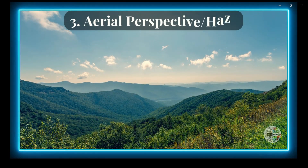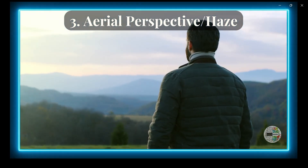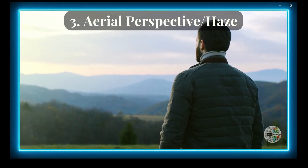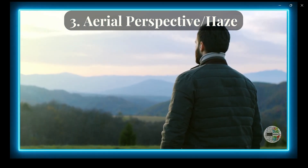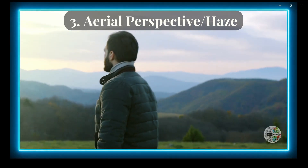Number 3: Aerial Perspective. When objects are far away, they might look fainter and a bit bluish due to the haze in between. Haze is nothing but atmospheric dust particles, fog, or water vapor. Imagine distant mountains looking hazy compared to the sharpness of nearby hills. However, this sharpness might change depending on the presence of air or haze.